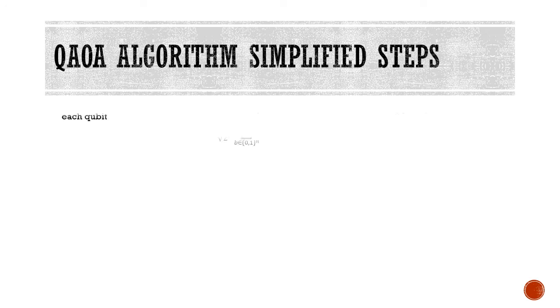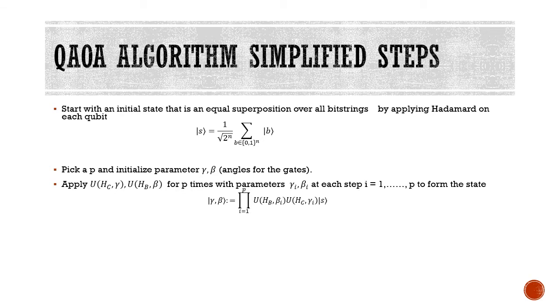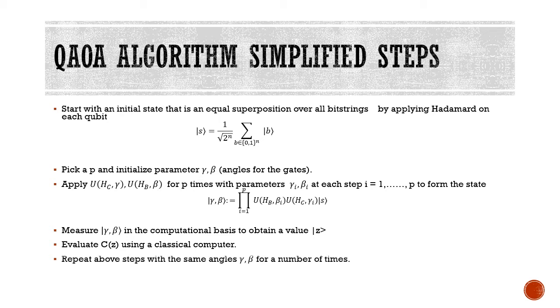Let us do it in a simple way. We start with a superposition of all qubits, which is basically applying Hadamard on each qubit. Then we initialize the parameter P and pick up angles gamma and beta. Then we apply the unitary operators U(Hc, gamma) and U(Hb, beta) in alternate fashion until we reach P. We measure the state vector of the computational basis to obtain the value of z or the bit string. Since we obtain the value of z, we feed it back to the computer and repeat the steps a number of times till we reach P.